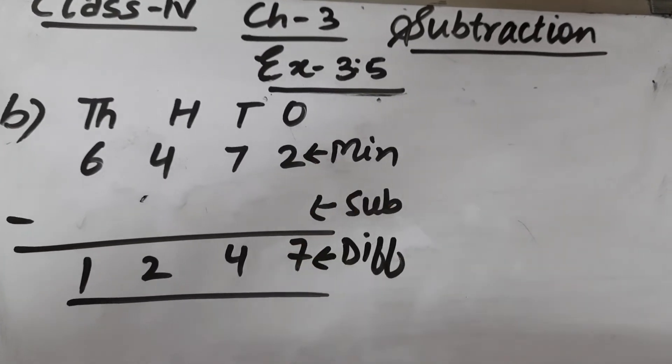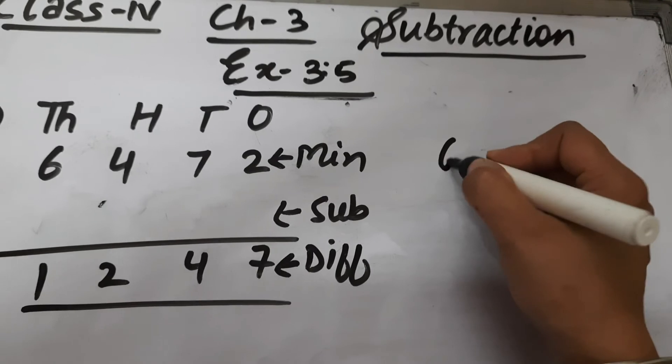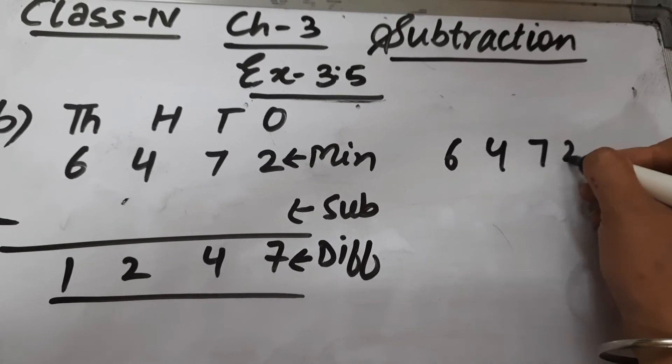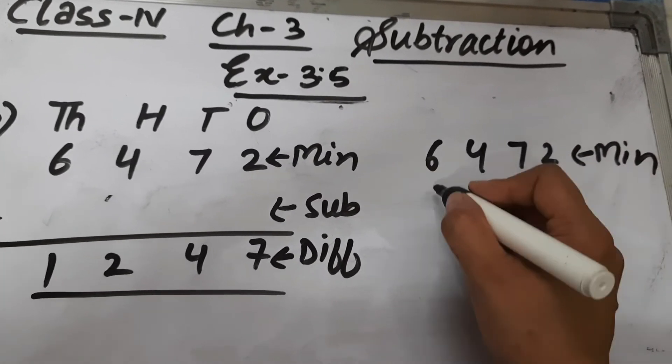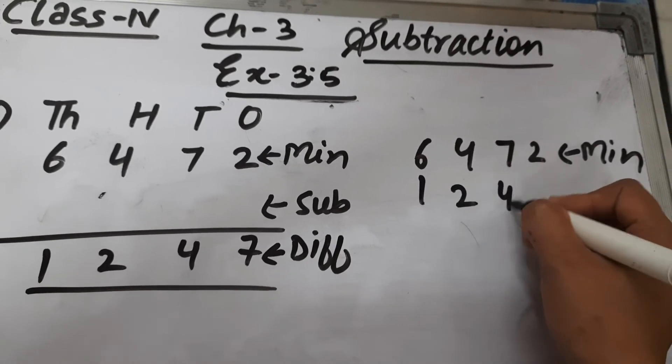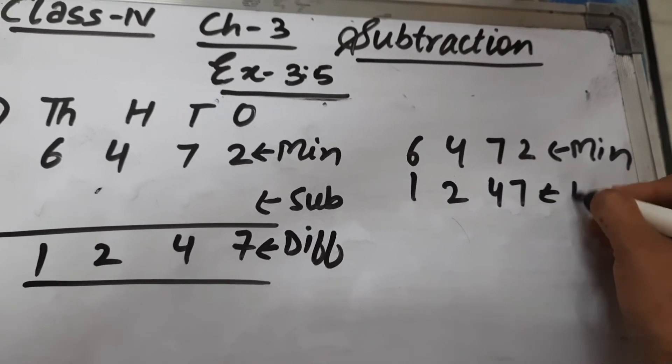For finding the subtrahend, we will subtract the difference from the minuend. We cannot subtract 7 from 2, so this becomes 12 and this becomes 6.